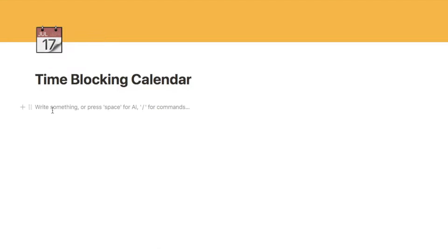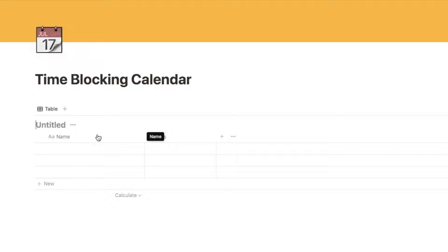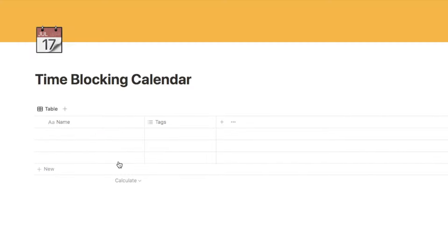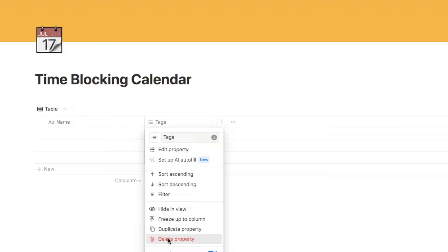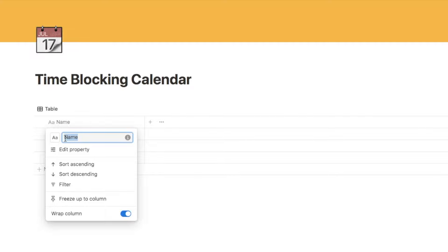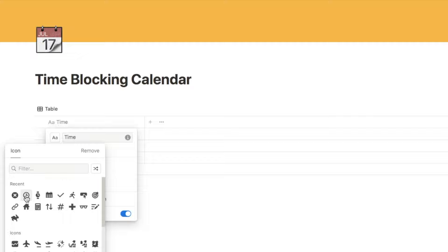The first thing we're going to do is add a new database for our weekly schedule, so I'm going to type forward slash database and go with the database inline option. I'm simply going to name this one 'time blocking schedule' and hide the title because we don't need to see it — click on the three dots and hide the title. We're also going to delete the tags property because we don't need that either. In this first column we're going to input the time of day, so I'm going to click here and change the name of this column to 'time' and change this icon to a clock.